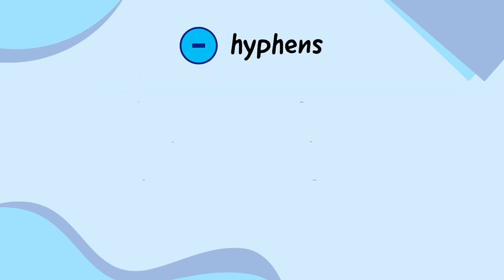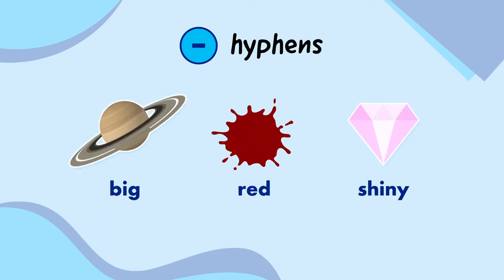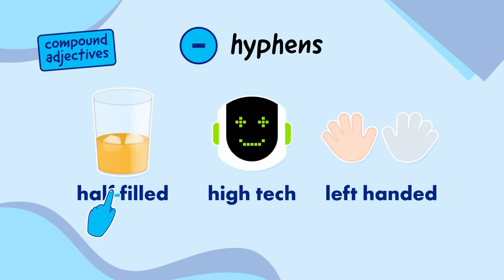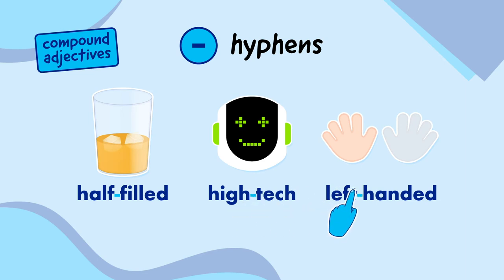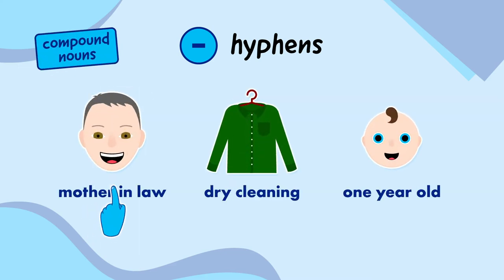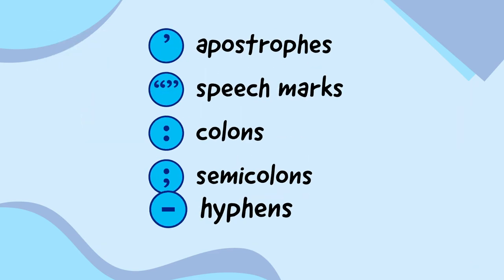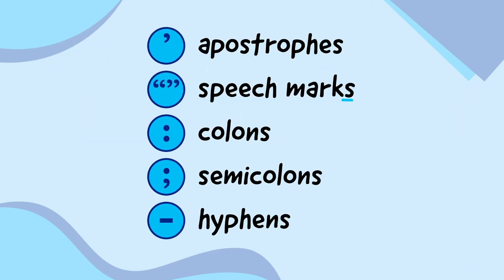Hyphens are used to link words together to create compound words. Usually, adjectives or describing words are single words like big, red, and shiny. But we can use a hyphen to link two or more single words together to make a compound adjective, like half-filled, high-tech, and left-handed. We can also use hyphens to link single words into a compound noun, or naming word, like mother-in-law, dry-cleaning, and one-year-old. So we've got apostrophes, speech marks, colons, semicolons, and hyphens.